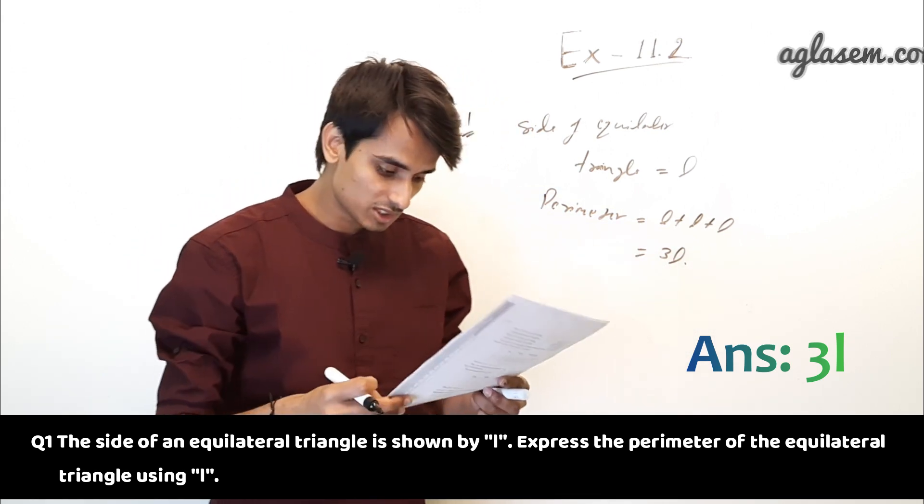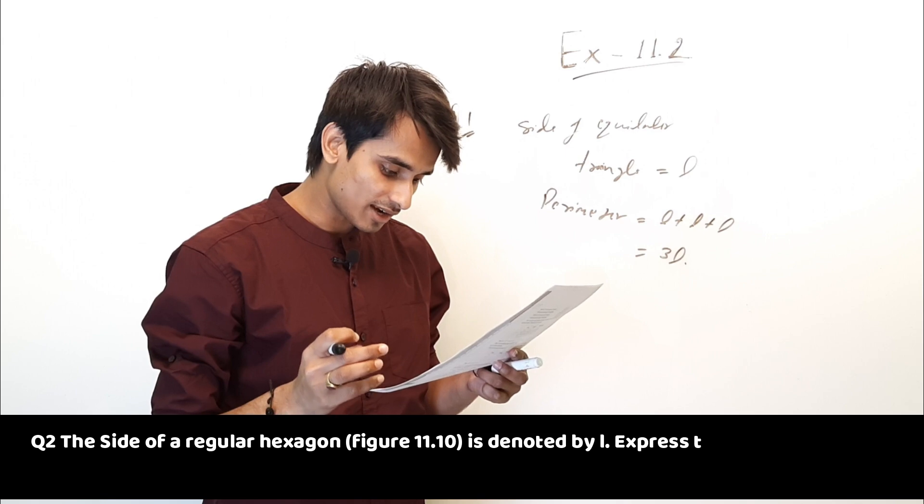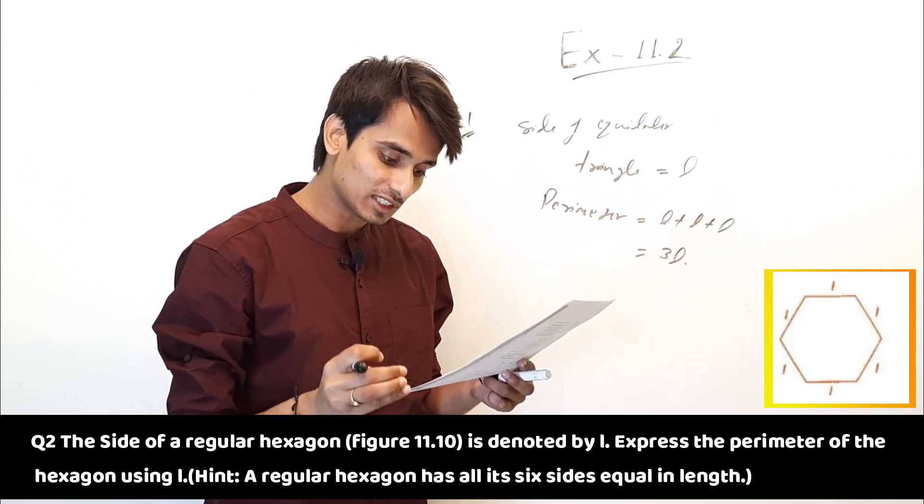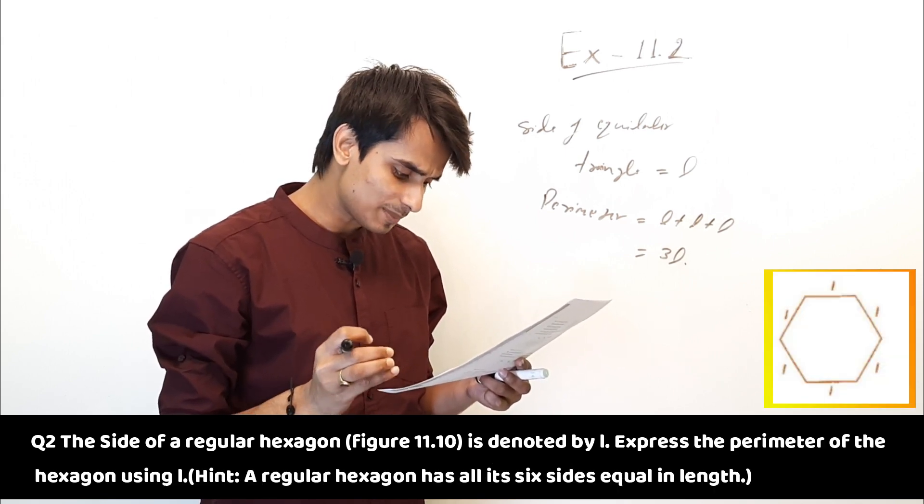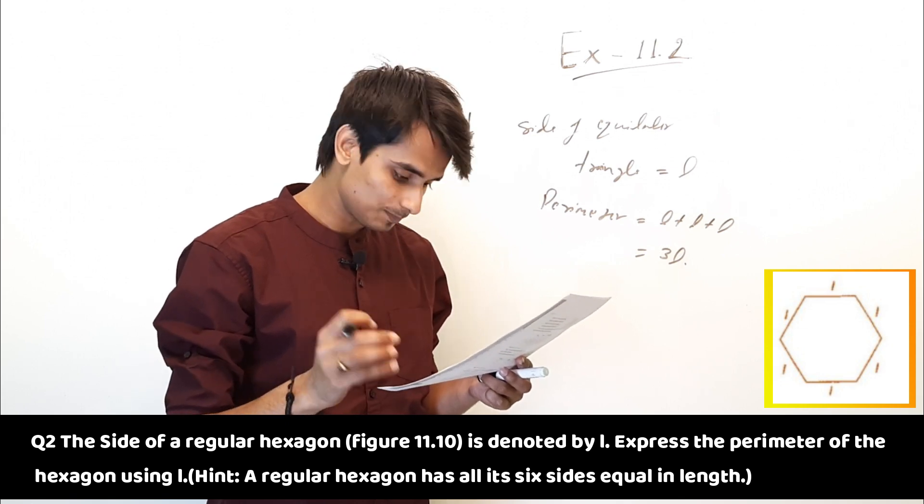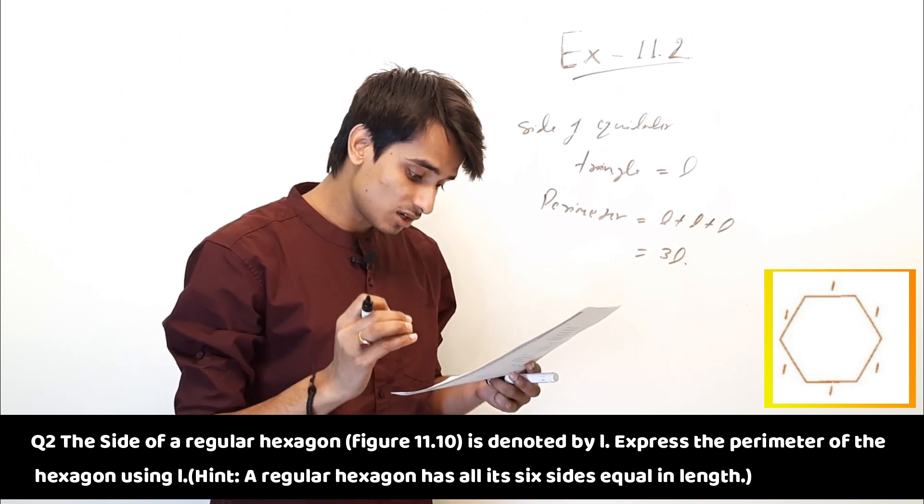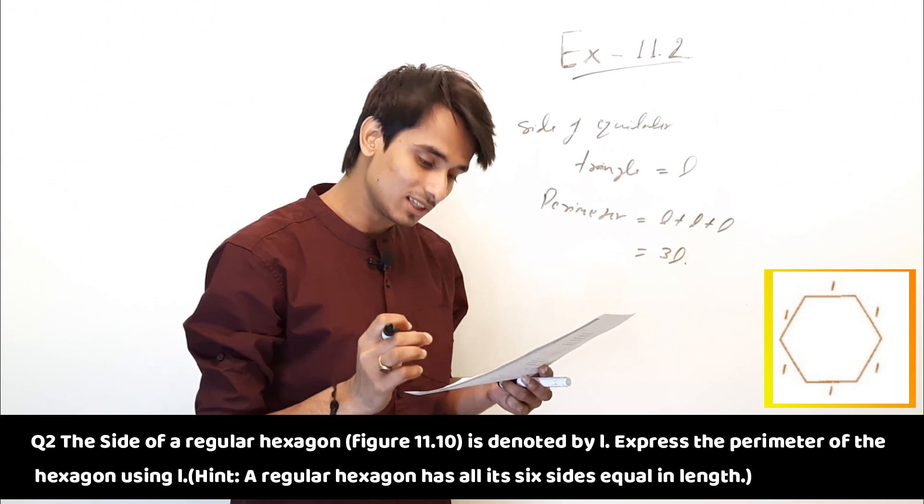Moving to the next question. The side of a regular hexagon, Figure 11.10, is denoted by L. Express the perimeter of the hexagon using L. A regular hexagon has all its 6 sides equal in length.